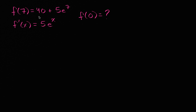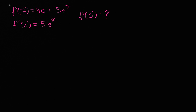We're told that f of seven is equal to 40 plus 5e to the seventh power, and f prime of x is equal to 5e to the x. What is f of zero? To evaluate f of zero, let's take the antiderivative of f prime of x, and then we're going to have a constant of integration there, so we can use the information that they gave us, that f of seven is equal to this.